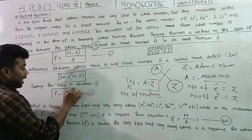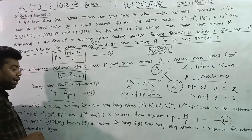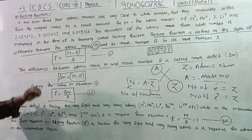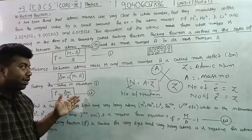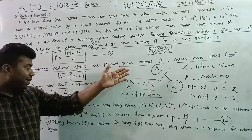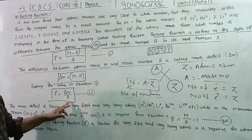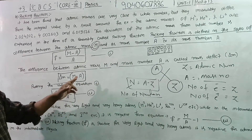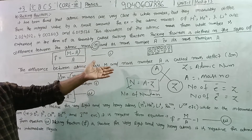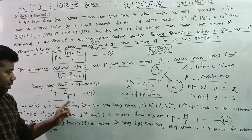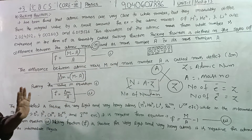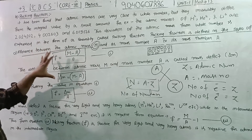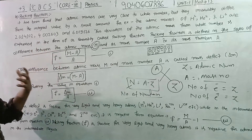If we call del M the mass defect, then F is equal to del M by A. So we have packing fraction as the ratio of mass defect per mass number — mass defect del M divided by A, which is the mass defect definition of packing fraction.